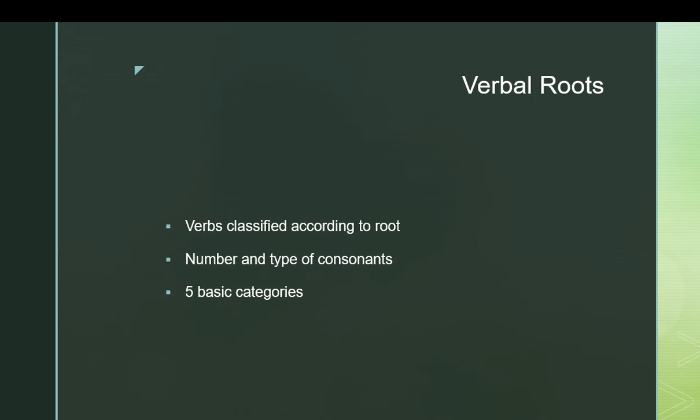Verbs are classified according to root, and by this I mean the word of the verb itself, the base word. There are five broad categories of roots based on the number of consonants and the type of consonants that are in the word. Now, there are other forms, other root types that we're not going to get into now because they're just not super common. For now, we can pretend that there are five basic categories of verbs and a very small number of irregular ones added in.